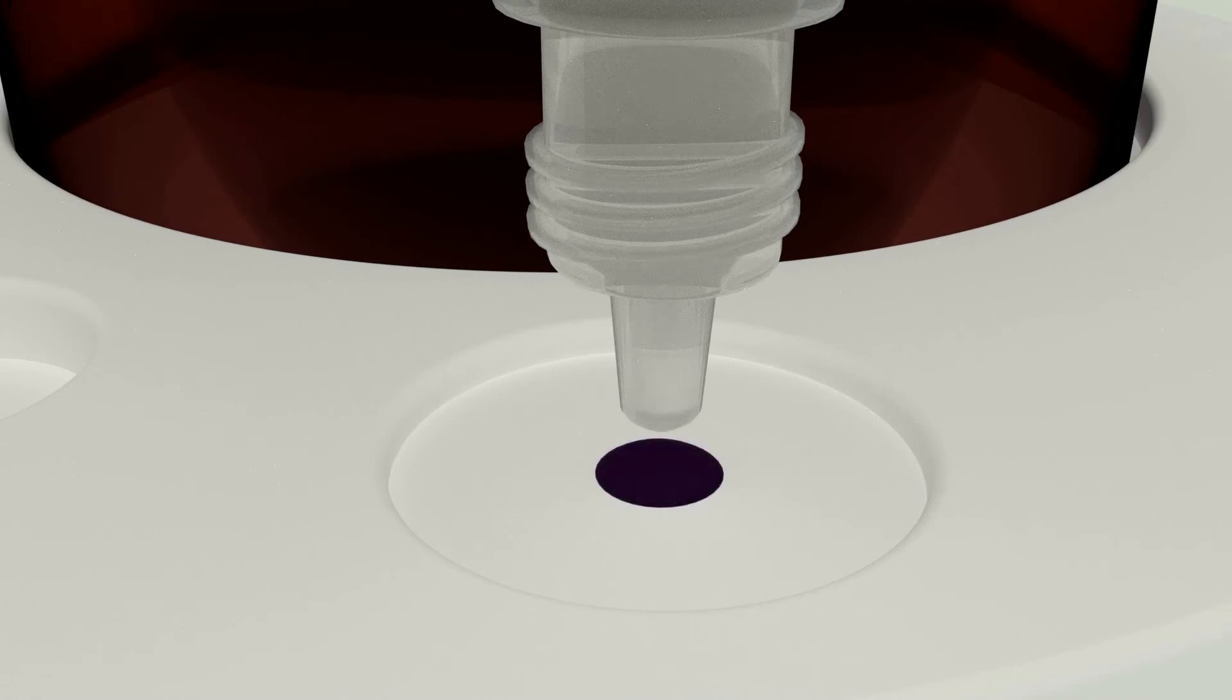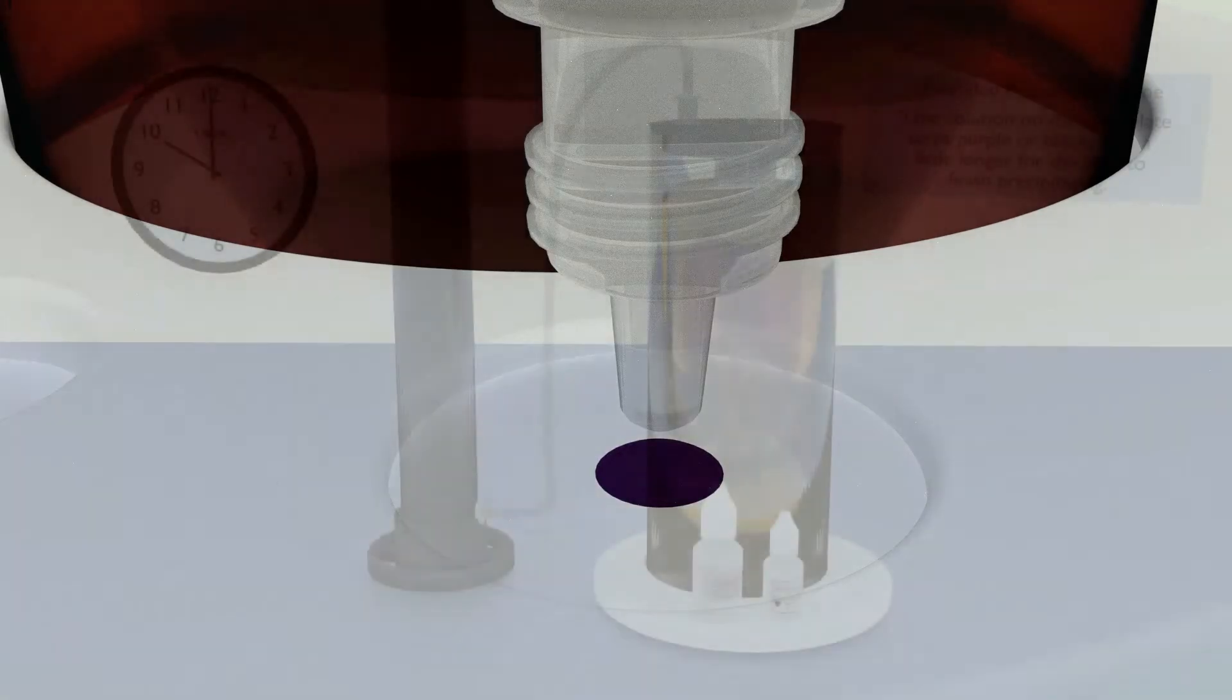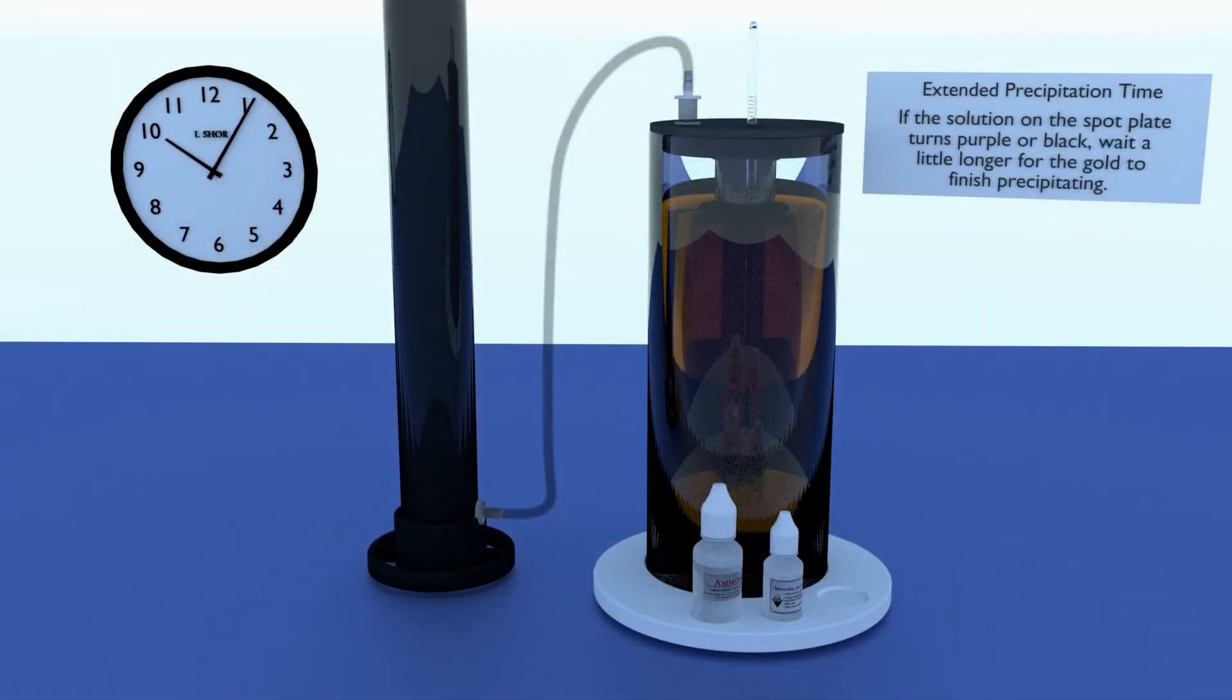If any gold remains dissolved in solution, the sample would immediately turn purple or black. This test is exceptionally effective. Even 4 parts of gold per million parts of solution will cause the sample to change color. If you see a color change to purple or black, give the solution more time to complete precipitation, and then test again.